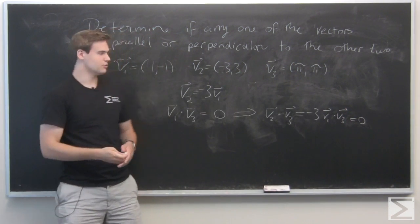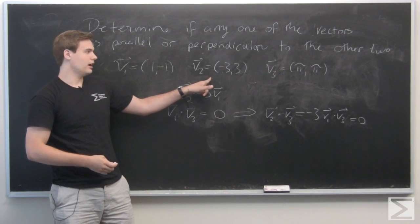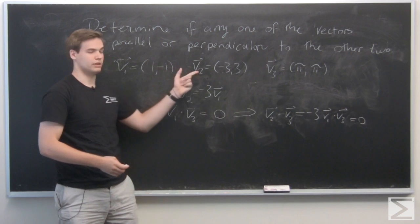In conclusion, we have that v1 is parallel to v2, and v3 is perpendicular to v1 and v2.